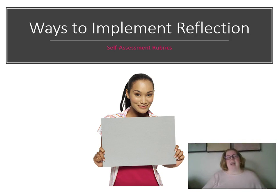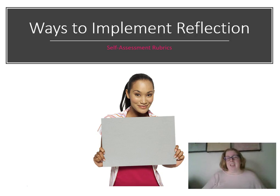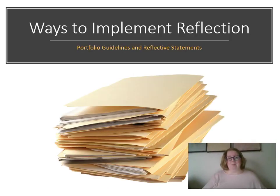We want to help students calibrate so they have a more accurate picture of their strengths and weaknesses — and only through practicing will they be able to do that. It also keys them into the things you're looking for. Even if you give students a rubric ahead of time, there's no guarantee they're actually looking at it — especially our weaker, more vulnerable students. By having them complete that self-assessment rubric, we're ensuring they at least looked at the rubric before turning in their work.